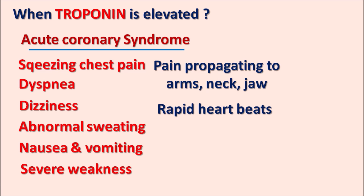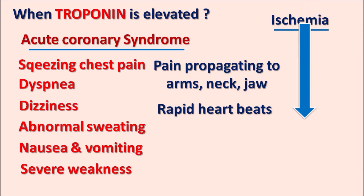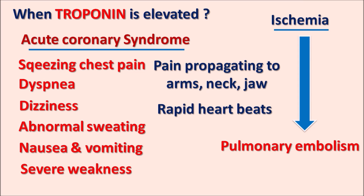Troponin levels can also be elevated in other conditions where ischemia is produced by disorders other than direct cardiac injury. Particularly, lung disorders may lead to cardiac ischemia — for instance, pulmonary embolism or COPD (chronic obstructive pulmonary disorder) may also lead to elevated troponin levels. Whenever troponin levels are elevated, cardiac damage is indicated.